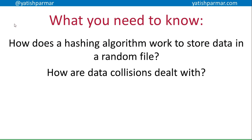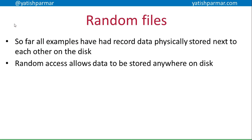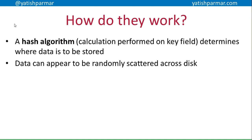How are data collisions dealt with? In a random file, previous examples had all records stored physically next to each other on the disk - one record followed by the second, third, fourth, and so on. But with a random file, random access data is stored anywhere on the disk. It looks random, but actually a hash algorithm is applied to the key field, and that determines the address where the data needs to be stored.